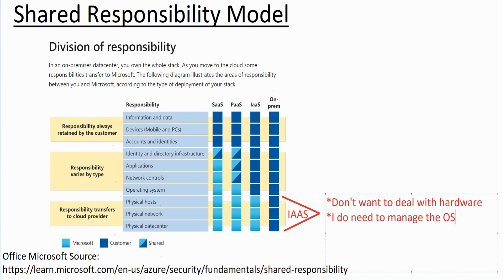With IaaS, you do need to manage the operating system. Why? Because there may be specialized software that needs to be installed on the OS that Microsoft isn't going to do for you. You need to set up a Windows Server or a Linux server with complete control — you connect into that VM and install whatever you want, just like a physical server on-premise.